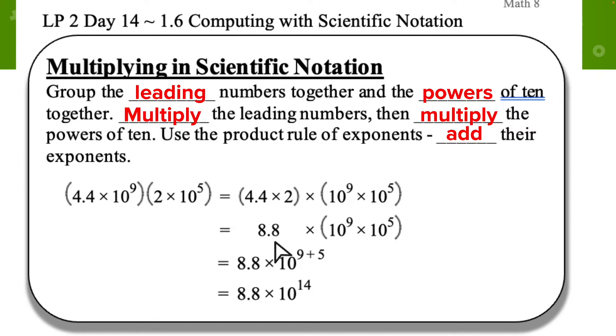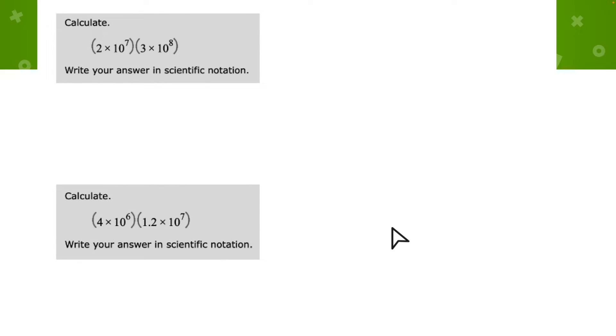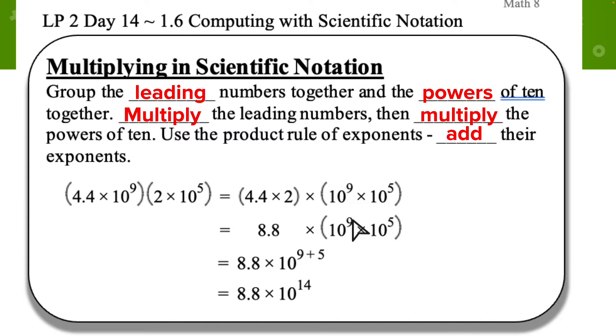And then for the powers of 10, what I want to do since they're the same base, they're both a base of 10, I can add the exponents because there are 9 here and there are 5 here and everything is being multiplied because remember, exponents just mean repeated multiplication. So everything is being multiplied when we're talking about this. So I can go 9 plus 5 and get 14. So this is rewritten using the multiplication for scientific notation.